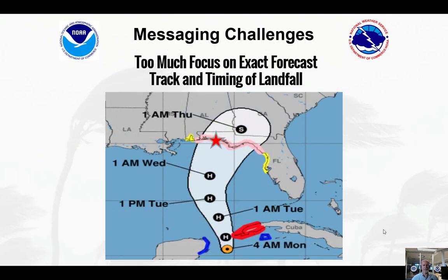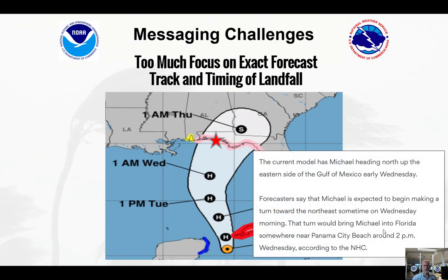One of the main messaging challenges is that oftentimes too much focus is placed on the exact forecast track and the timing of when the center of the storm will make landfall. For example, take this scenario here where you are at the red star.